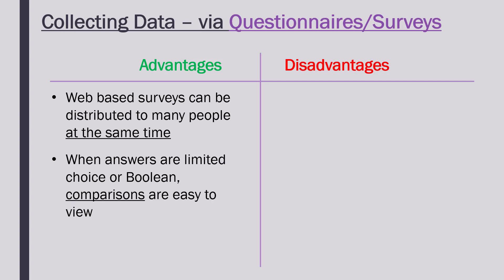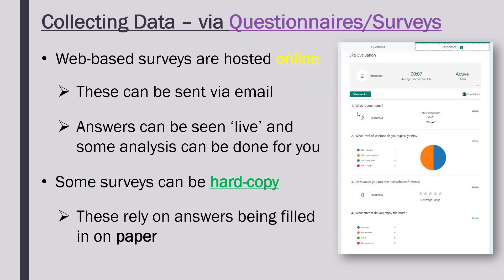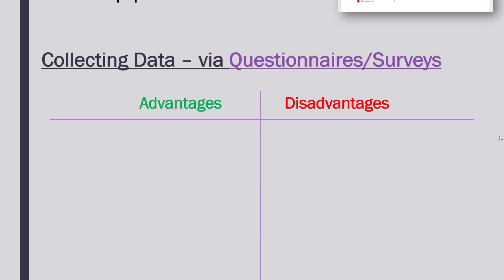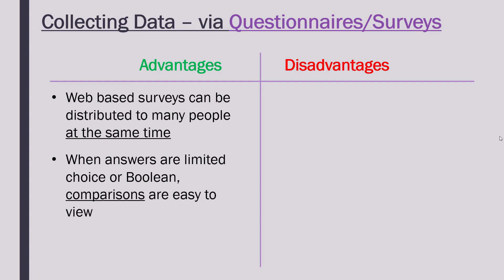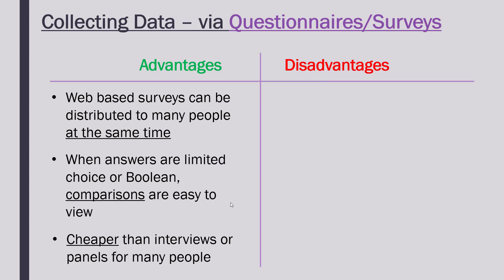Going back to the swimming club example, the first question 'what is your name' is open-ended, so we can get any name in that field. But 'what level of sessions do you typically enjoy' has only a few options — novice to expert — and we can easily compare them straight away; in fact it's doing it for us in a pie chart. Whereas an open-ended question is harder to compare and requires manual analysis. Also, questionnaires are generally cheaper than alternative methods like interviews or consumer panels, because you just write the questions and distribute them — there's not a lot of your time involved while they're being filled out.